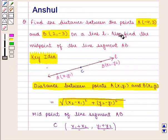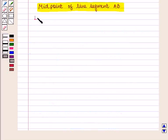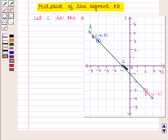Now the next part of the question says: also find the midpoint of the line segment AB. That is, we have to find the midpoint of the line segment AB. Let point C be the midpoint of the line segment AB, and we have to find the coordinates of point C.